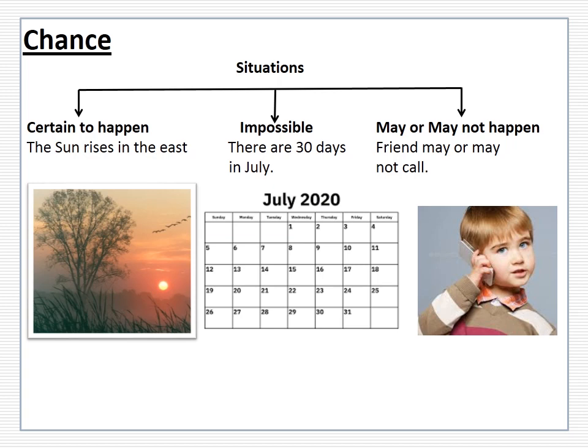The second situation is impossible — which is not going to happen any time. For example, are there 30 days in the month of July? No, there are 31. Or an ant growing to 3 meter height — it is quite impossible. The last one is may or may not happen. That means it may happen but is not certain — today my friend may call me or may not, India may win the next test series or not, we may get tickets for a movie or may not.